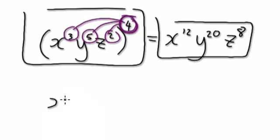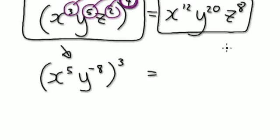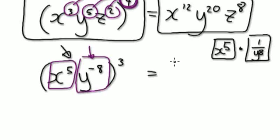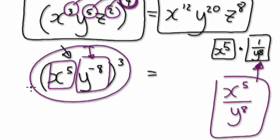Now, if you get given something like this — x to the power of 5, y to the power of minus 8 — it still works, even if it's to the power of a minus thing. What's in here, you could visualize as x to the power of 5 times 1 over y to the power of 8. So the minute you see to the power of a minus something, you can visualize it as x to the power of 5 over y to the power of 8.